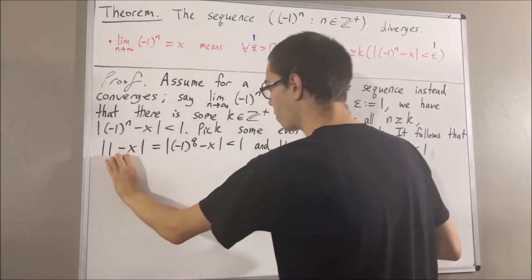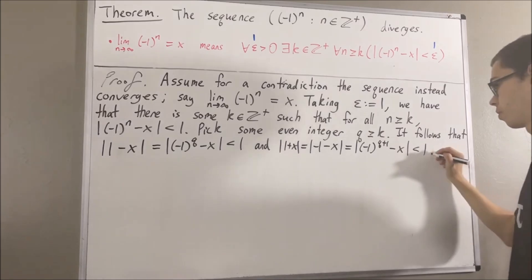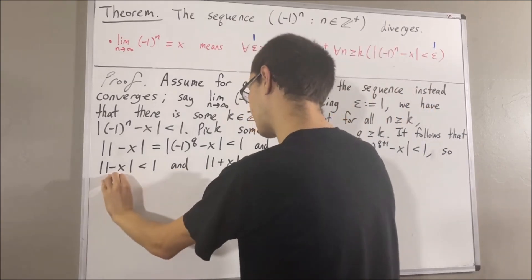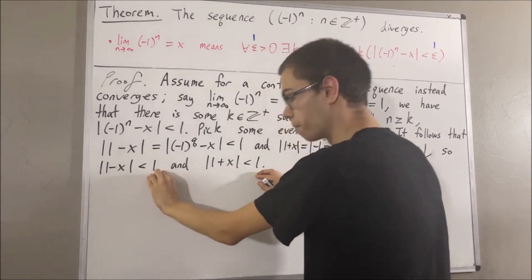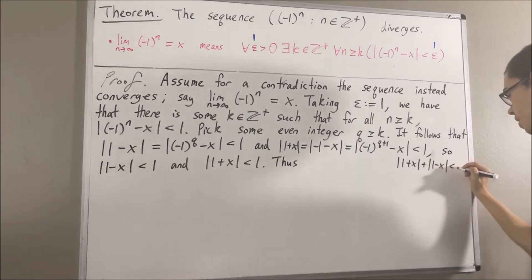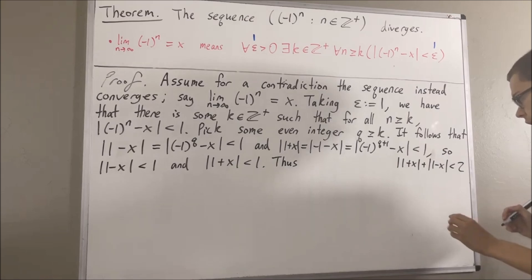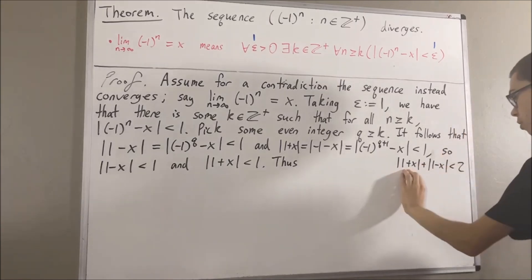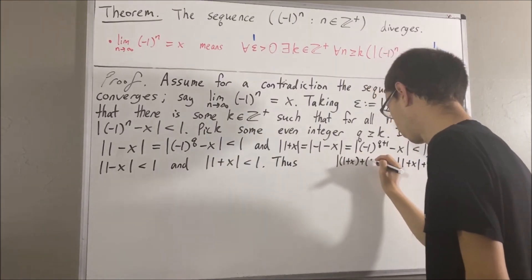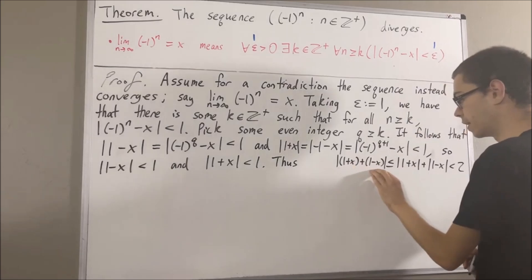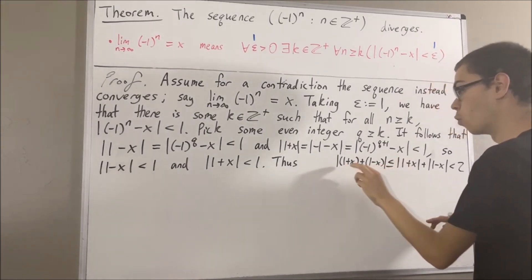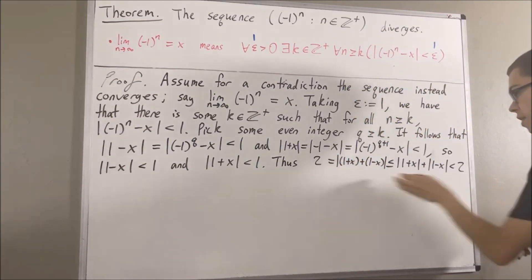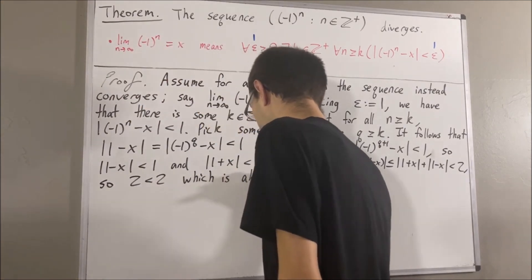So, putting this together, we have that absolute value of 1 minus x is less than 1, and absolute value of 1 plus x is less than 1. Adding these two inequalities together, we get that absolute value of 1 minus x plus absolute value of 1 plus x is less than 2. And from the triangle inequality, the absolute value of 1 minus x plus the absolute value of 1 plus x must be greater than or equal to the absolute value of 1 plus x plus 1 minus x. The x's cancel out, so this is just the absolute value of 2, which equals 2. So, this tells us that 2 is less than 2, and we've reached a contradiction.